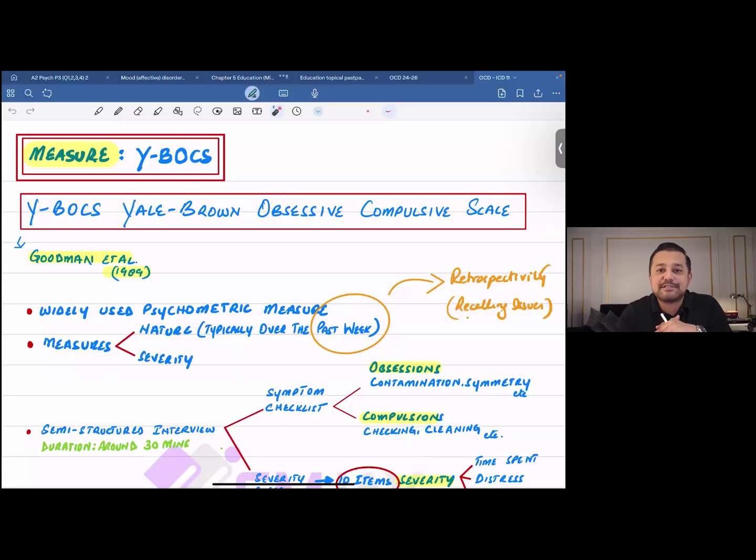Hello everyone, let's discuss YBOCS, that is Yale Brown Obsessive Compulsive Scale. YBOCS is a measure used to check the severity and nature of OCD symptoms. This particular scale was developed by Goodman et al. in 1989.